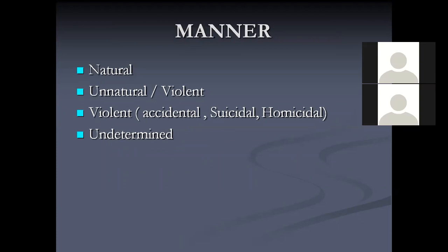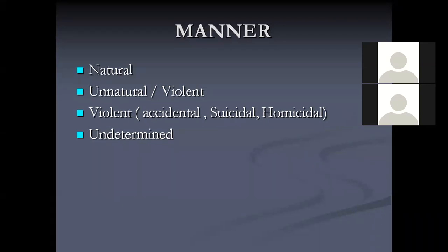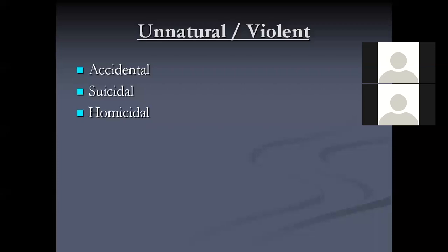Manner of death may be natural or unnatural or violent. Unnatural/violent is accidental, suicidal, or homicidal. There is also undetermined — when all investigations and post-mortem fail to reveal the manner of death. Natural is due to disease process. Unnatural includes accidental, suicidal (self-harming), and homicidal (by others).